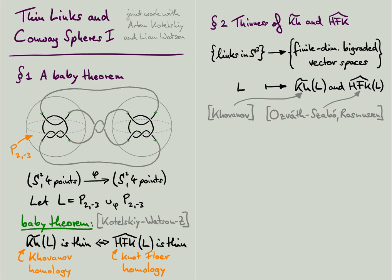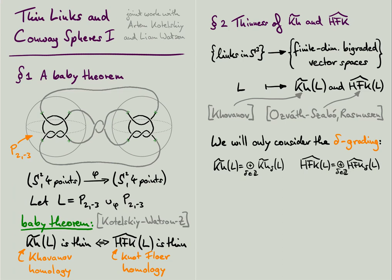In this talk I will treat these two homology theories as black boxes and only work with their formal properties. In fact, in this talk we will only consider these theories as singly graded homology theories. More precisely, we will only consider the so-called delta grading, which is a linear combination of the usual bi-gradings. So we will consider Khovanov homology as a direct sum of vector spaces that are indexed by the integers, and the same for knot-Floer homology.